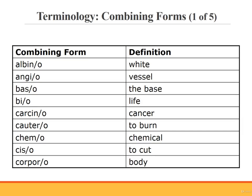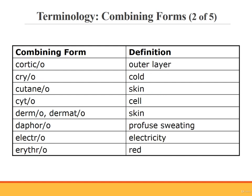There are a number of word parts used to build integumentary system terms. We will begin with some combining forms, some of which were briefly discussed earlier. Albino, angio, baso, bio, carcino, caudero, chemo, cisso, corporo, cortico, cryo, cutaneo, cyto, dermo or dermato, diaphero, electro.